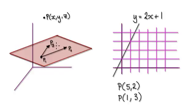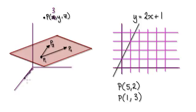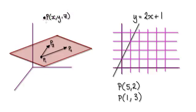Let's look at this 3D example. For a general point X, Y, Z — let's say X is 3 across, Y is 3 across in the Y direction, and let's say Z is 10. So this is your point here.